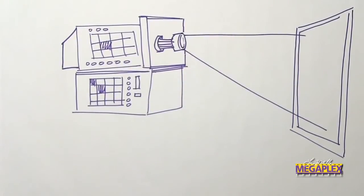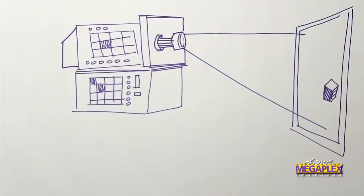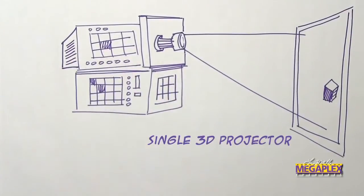Now, with these two separate captured images, a single 3D projector flickers back and forth between projecting the left eye image and the right eye image.